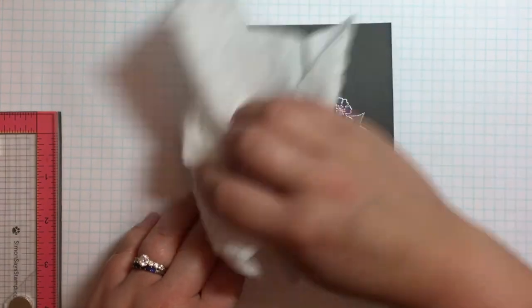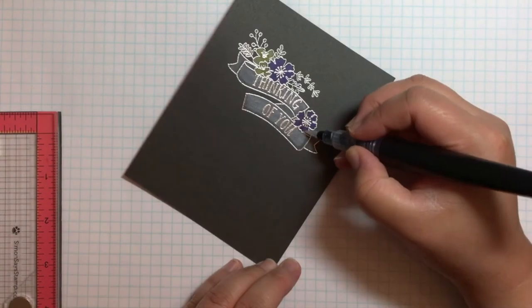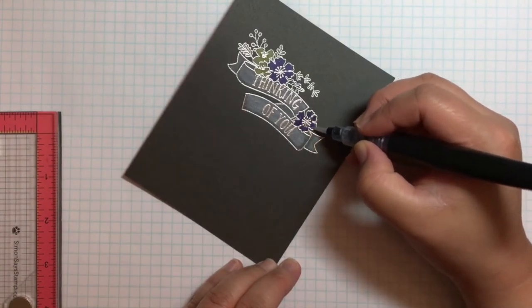I used the Swiffer cloth to wipe away the powder from my powder tool, and then coated the image with a layer of Spectrum Noir Clear Sparkle.